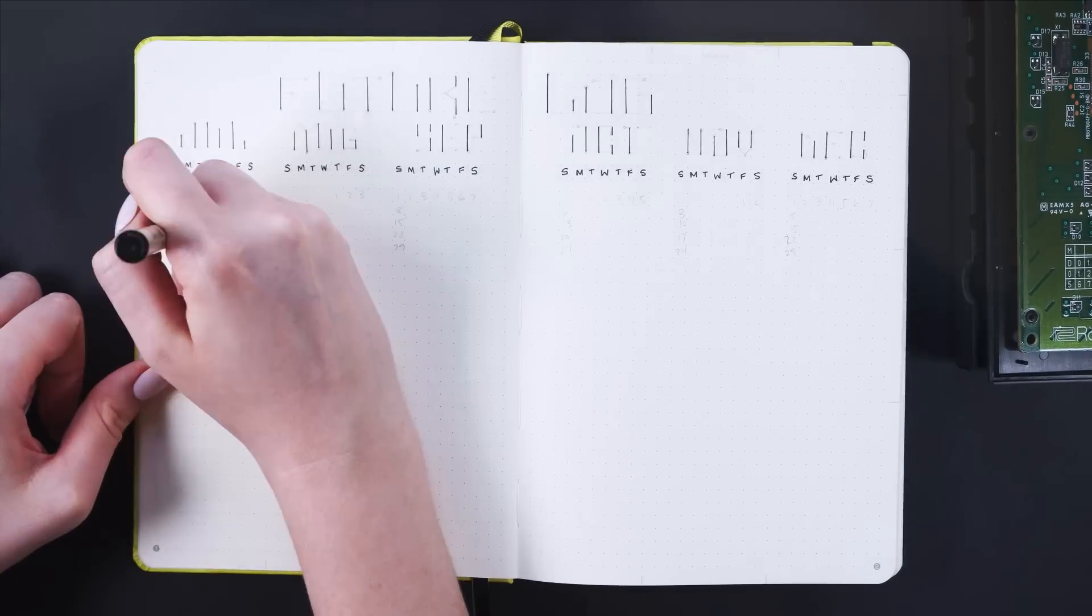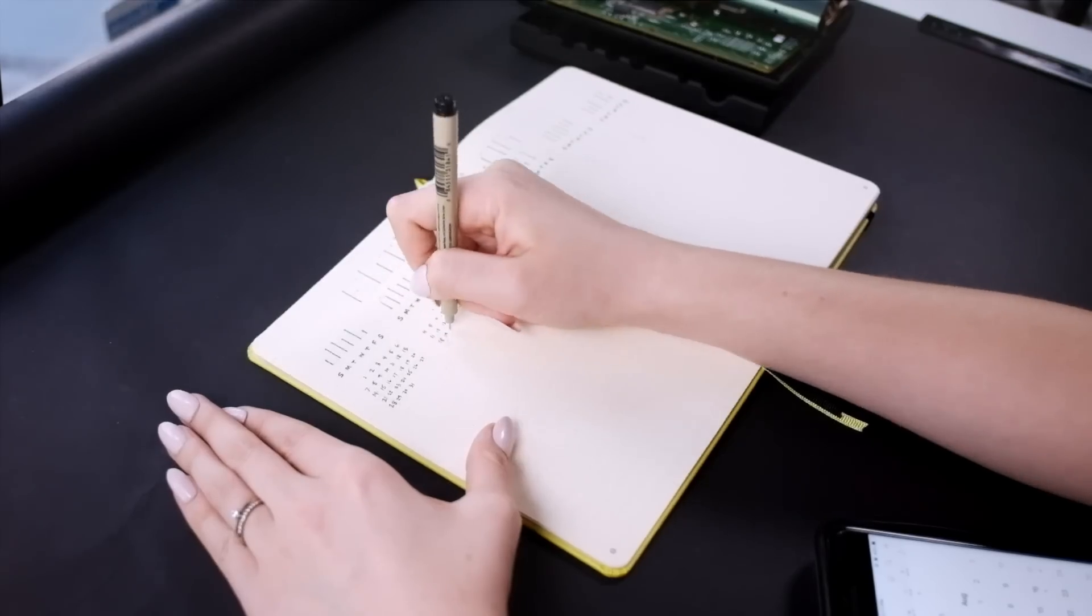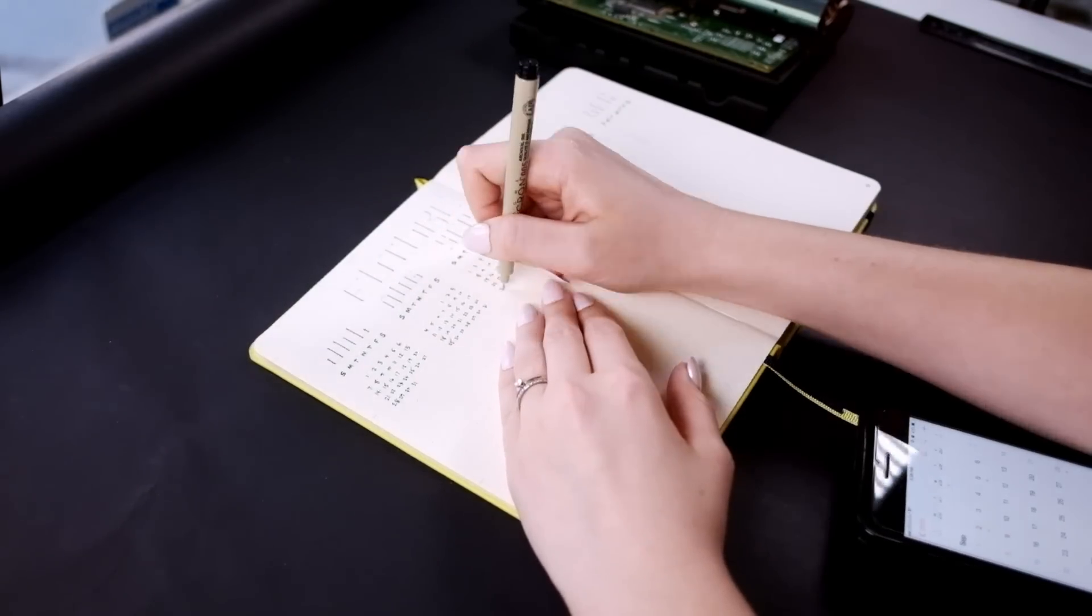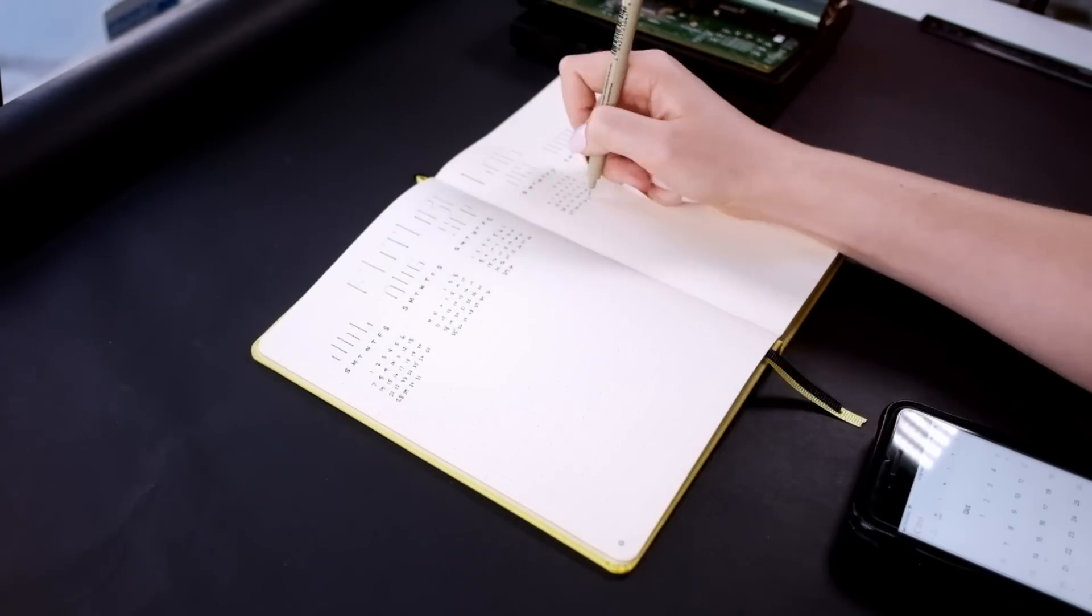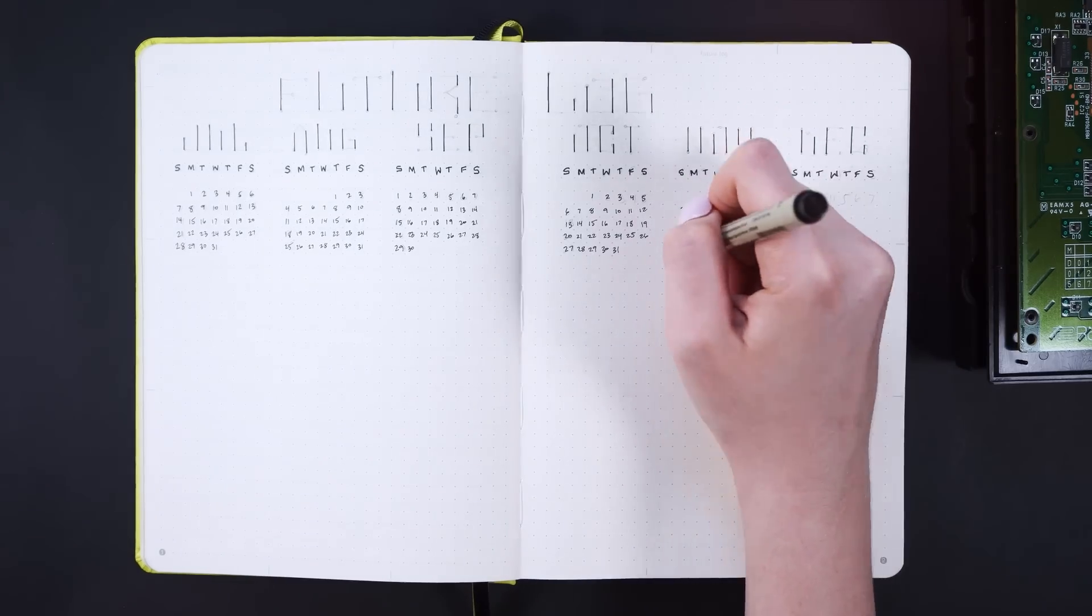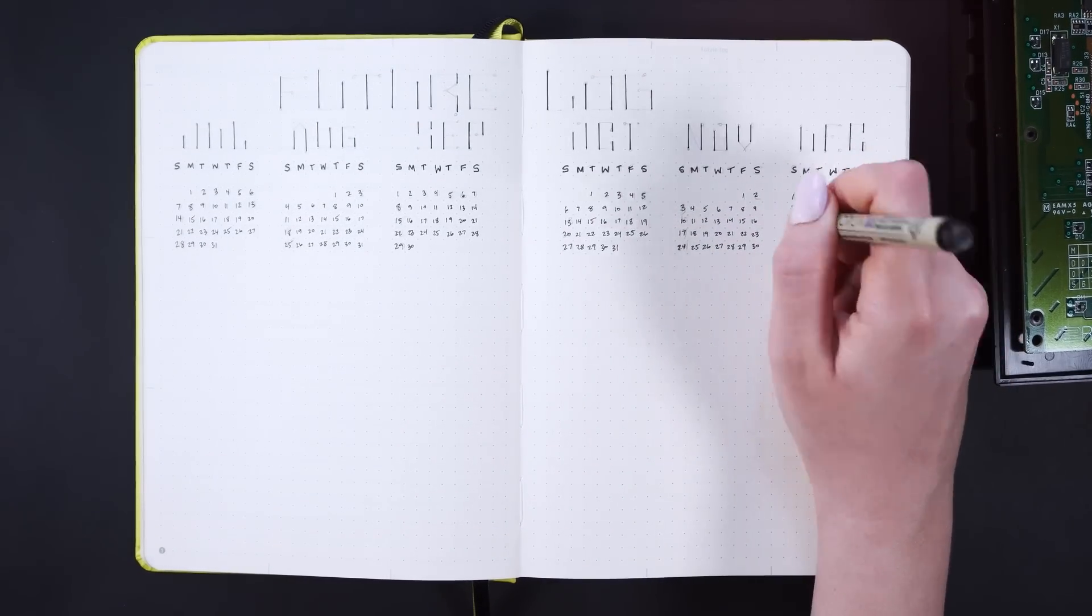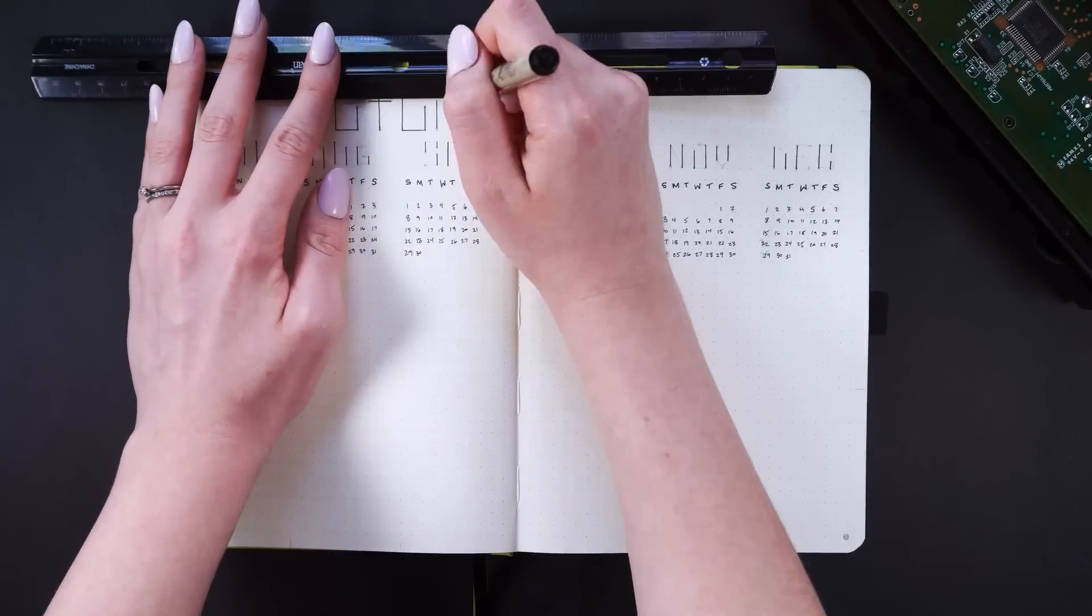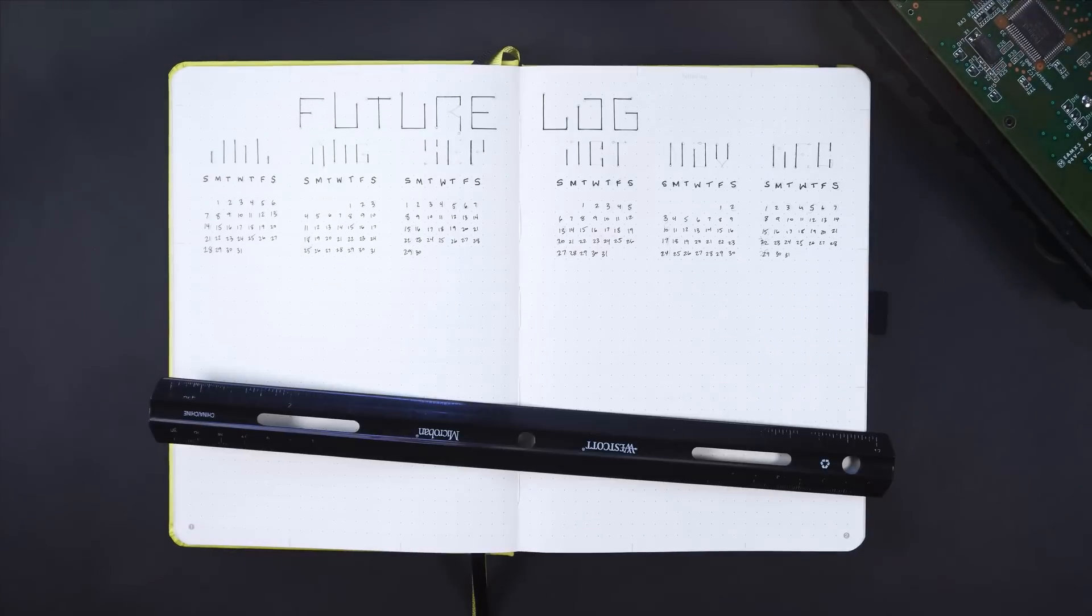The one traditional new bullet journal setup page that he does use and use quite frequently is the future log. He loves the future log and he uses it even more than I do, honestly. So I had to make sure to set up a future log and he wanted a full year with lots of space. So I decided to do six months on the first spread and six months in the second spread so we could have lots of room for each month. And I just set it up with my go-to future log setup.